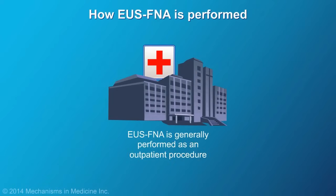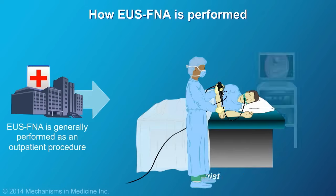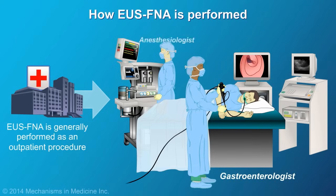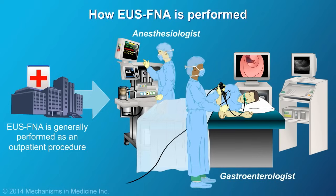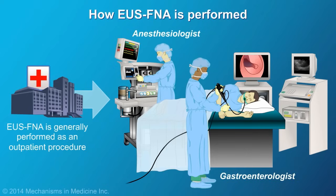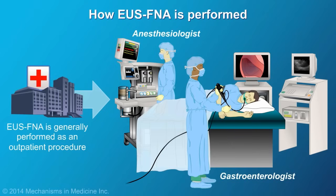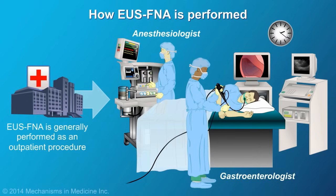EUS-FNA is generally performed as an outpatient procedure, but on occasion is performed when the patient is in hospital for an acute problem. Gastroenterologists may work alongside anesthesiologists to provide sedation. Intravenous fluids and anesthetics are supplied via an IV catheter. When indicated, an antibiotic may be given. Most patients are usually in deep sleep and do not report any discomfort. Throughout the procedure, your vital signs will be closely monitored. The procedure may be short or lengthy, depending on the complexity of the case.